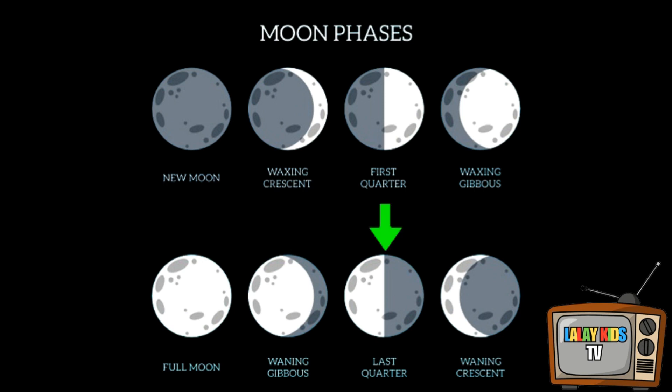Third quarter: half of the moon is illuminated in the morning sky. Waning crescent: a small, crescent-shaped sliver of the moon becomes visible in the eastern sky before sunrise. These phases occur due to the moon's orbit around Earth and the changing angles of sunlight falling on its surface.